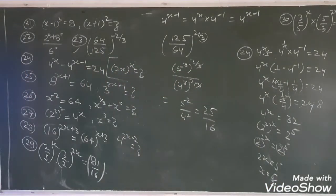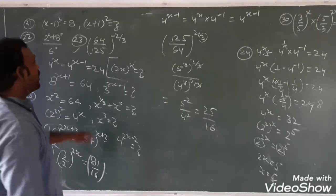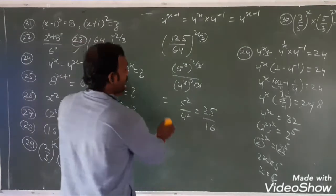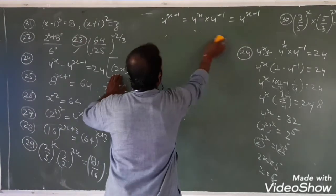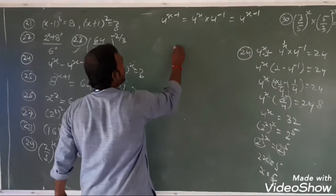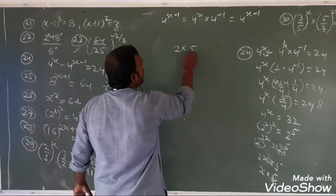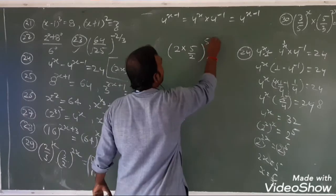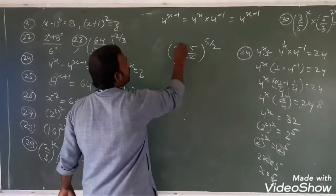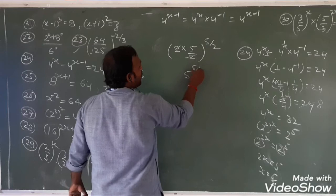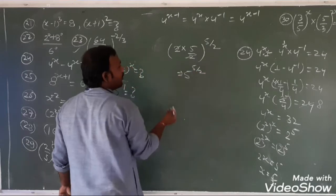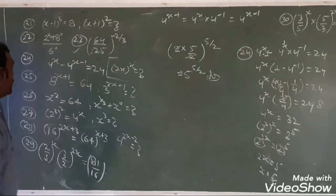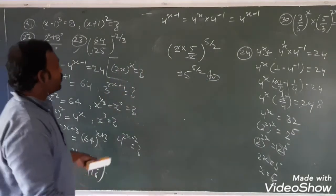Now we had to find (2x)^x. With x = 5/2: (2 × 5/2)^(5/2) = 5^(5/2). The 2 cancels, so the answer is 5^(5/2). This cannot be simplified further, so the answer for question 24 is 5^(5/2).